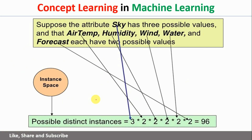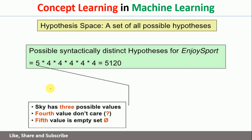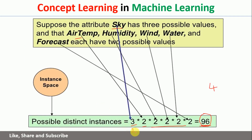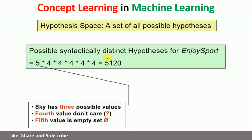Coming back to our main example: sky has 3 possibilities, air temperature has 2 possibilities, and so on for the remaining attributes. If I multiply all these, we get the number of possible instances — a total of 96 possible instances, out of which we have been given only 4 in this particular case. That is the instance space. For the hypothesis space, along with the 3 possibilities for each attribute, we add 2 more — question mark and null — so it becomes 5 into 4 into 4 and so on, giving 5120 hypotheses in the hypothesis space.